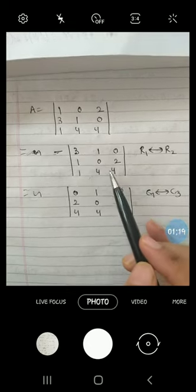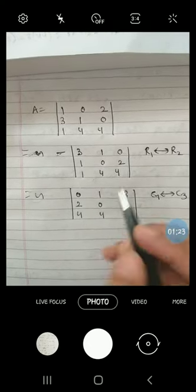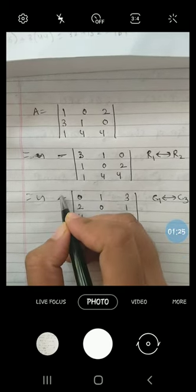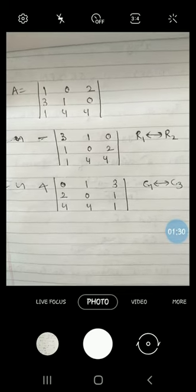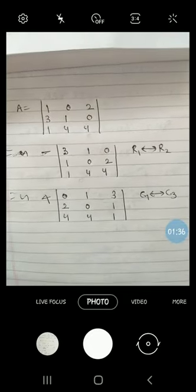Dekho, ek aur baar maine change kiya, c1 interchange c3. When I interchange these two columns, there was already one minus, and one more minus, so here it becomes plus again. So, determinant ki rows or columns ko interchange karne se, their numerical value remains the same but the sign changes. This is the second important property.